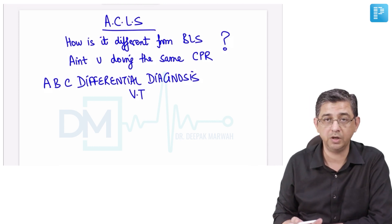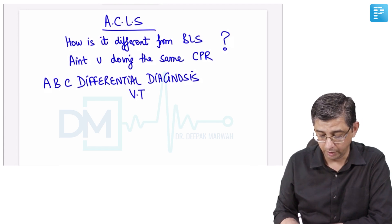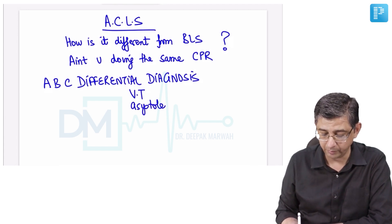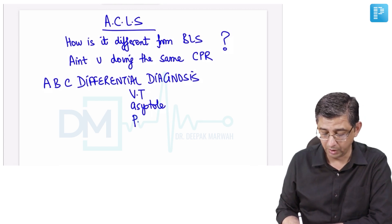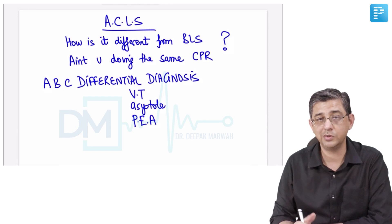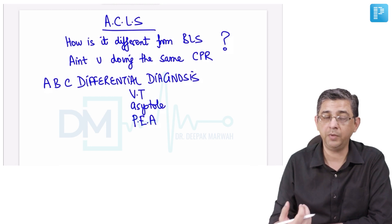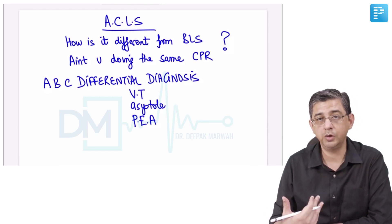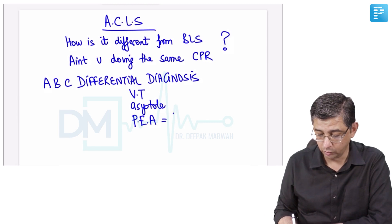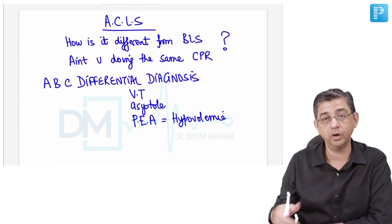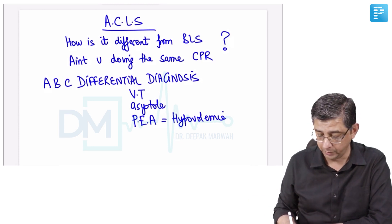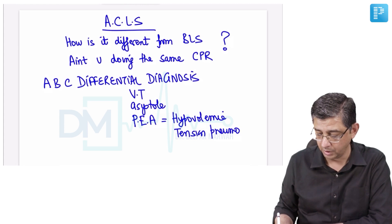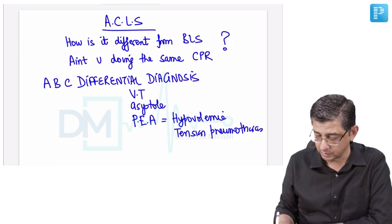In ventricular tachycardia, the heart is not getting time to fill with blood, so input and output both are falling. It could be asystole, for which the treatment is totally different. A patient could be having a tension pneumothorax, which is compressing the SVC and IVC, reducing venous return — so the heart is literally beating empty. Pulseless electrical activity can be due to dangerous hypovolemia, fluid loss, fluid shifts, or tension pneumothorax compromising venous return.